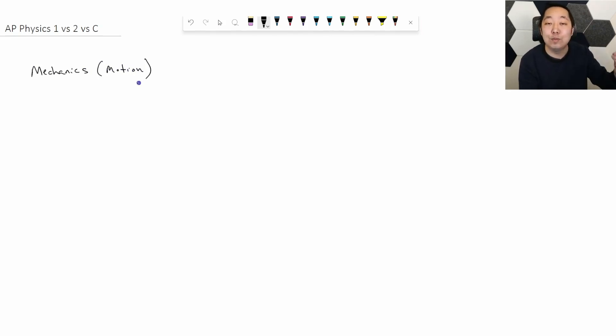This refers to how things move, motion, forces, acceleration, things going in circles, going down ramps, just like everyday kinds of motion, objects that are moving. And so there's two possible paths you can take here in terms of the AP Physics curriculum. You have AP Physics 1, and you have AP Physics C, AP Physics C Mechanics.